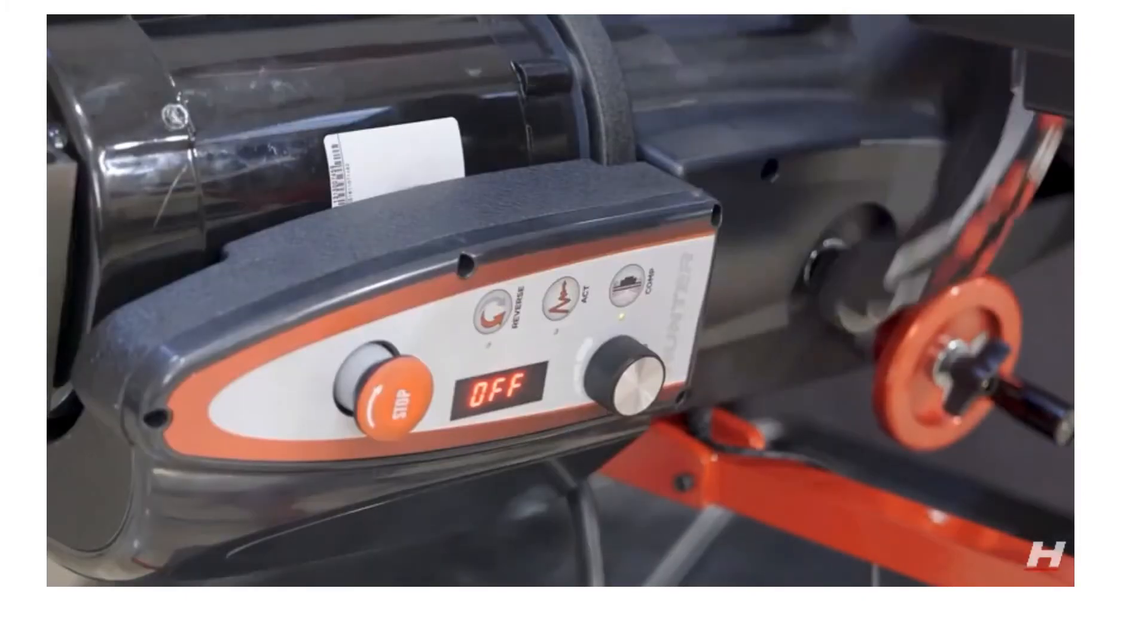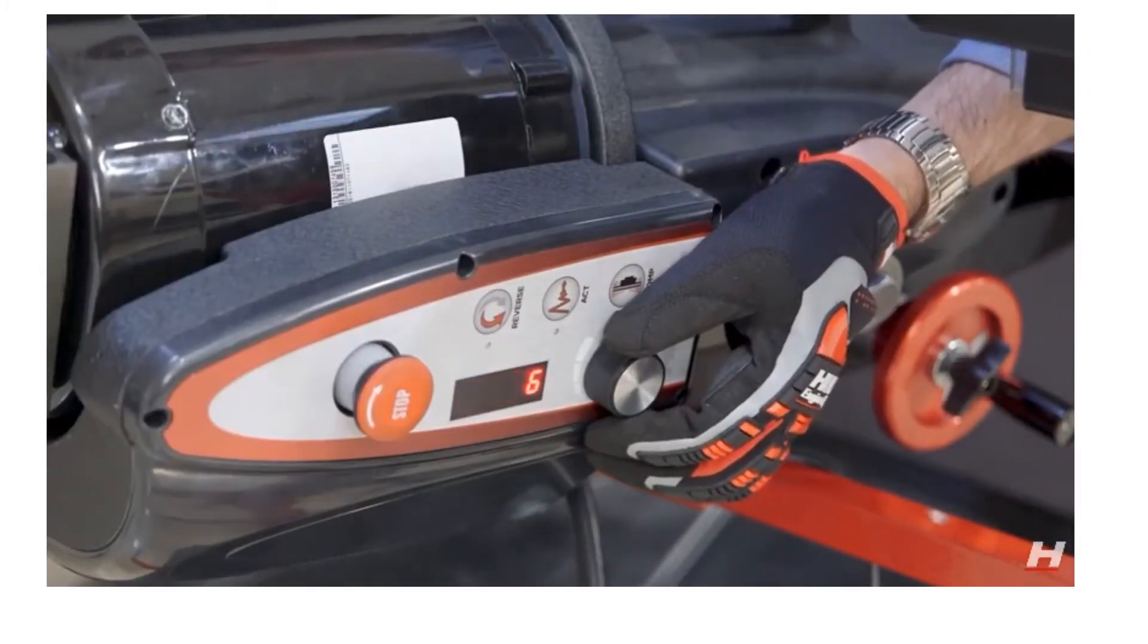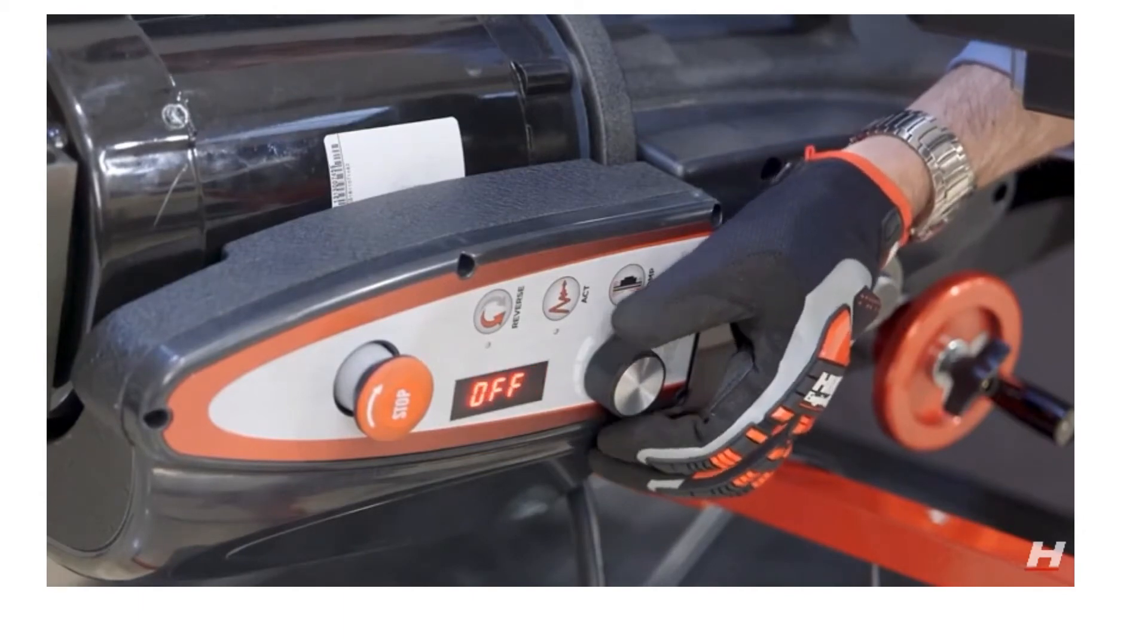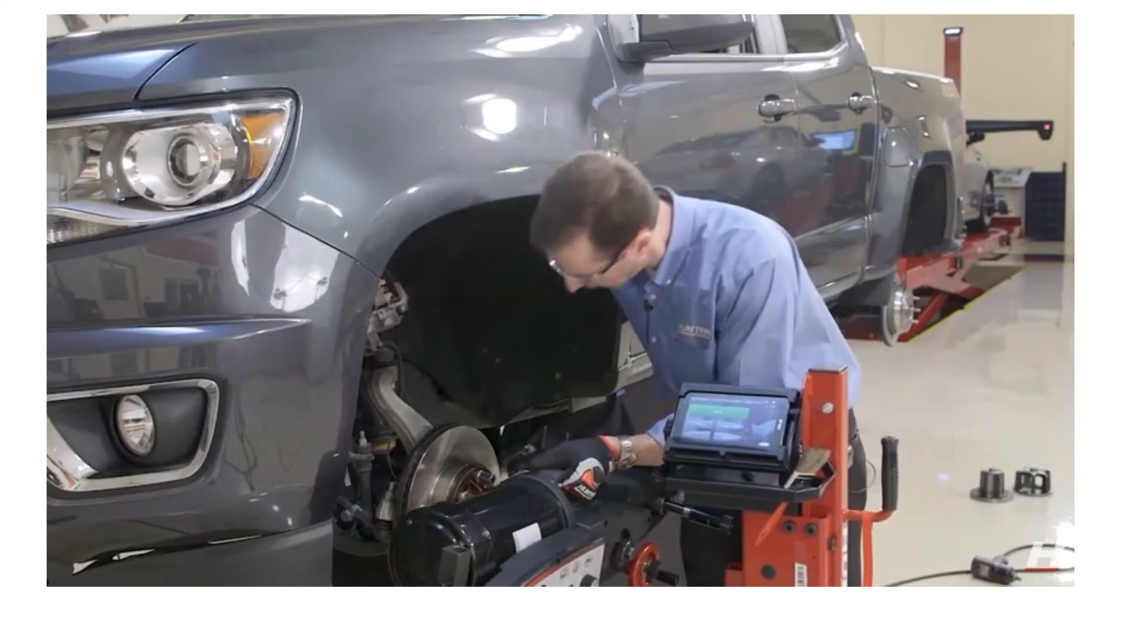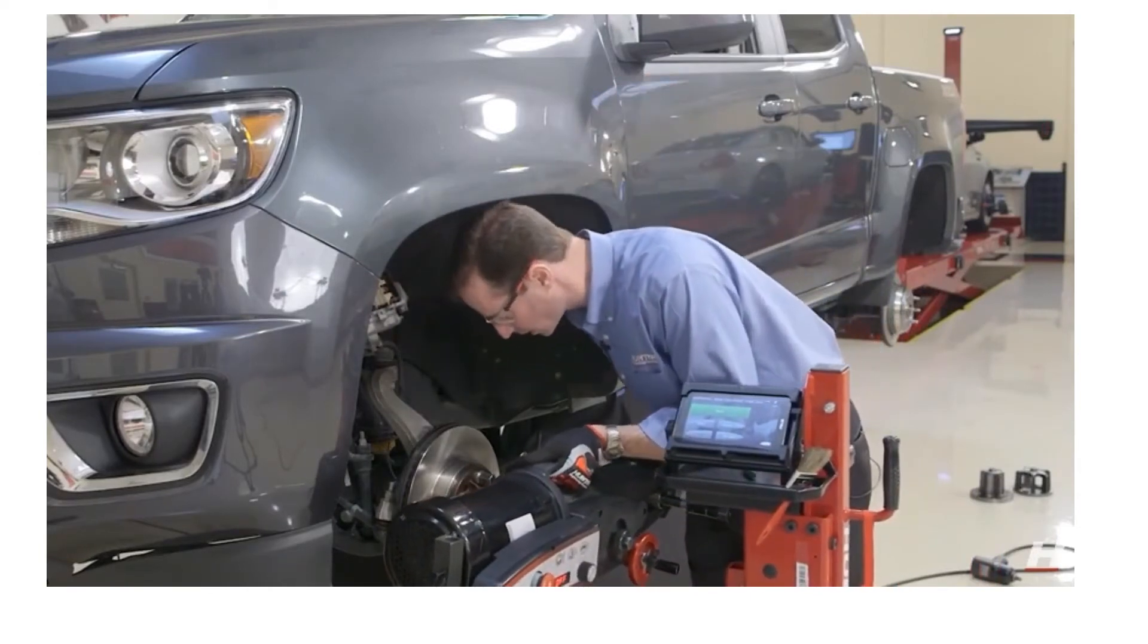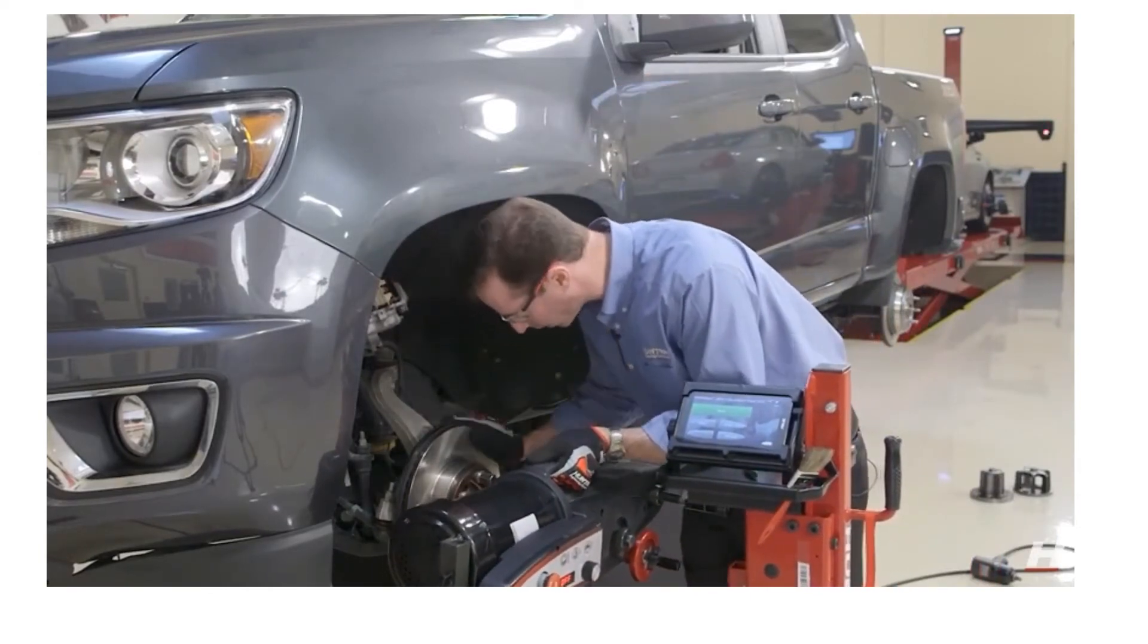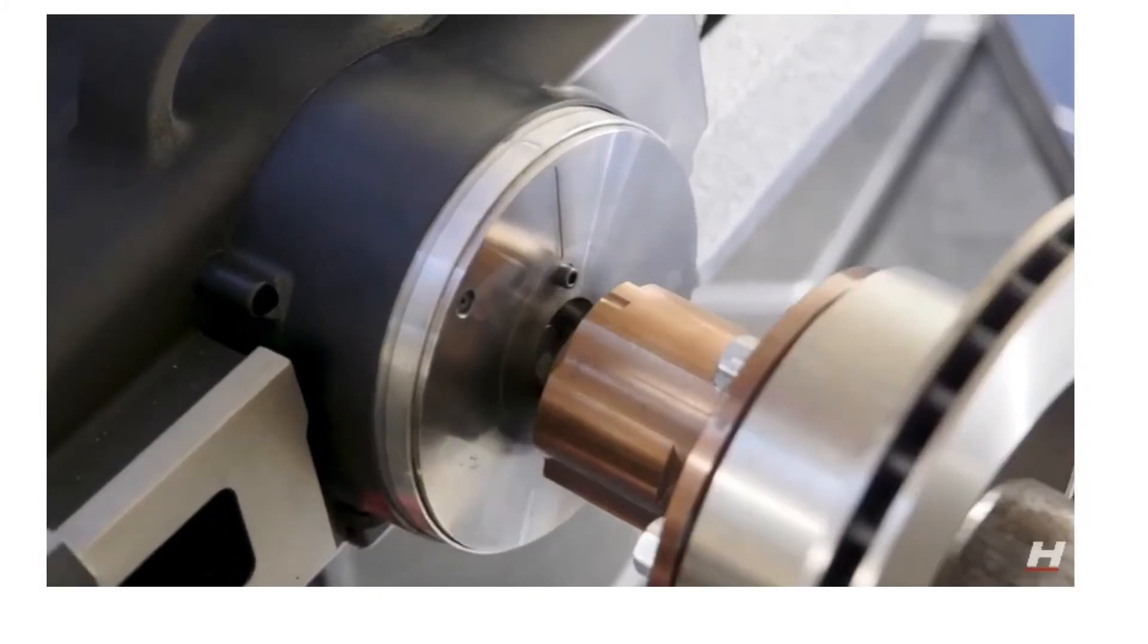So now all I need to do is turn the speed knob slowly until the anti-rotate pin comes to top dead center and now I'm going to bring my lathe up to the adapter. It's easiest to come from the top and move downward. Now I'm pushing the lathe onto the adapter.